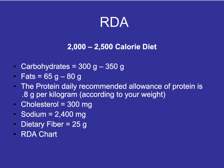Carbohydrates: typically you need about 300 to 350 grams in your diet. Fats: you need about 65 to 80 grams. Protein: the daily recommended allowance of protein is 0.8 grams per kilogram according to your body weight.